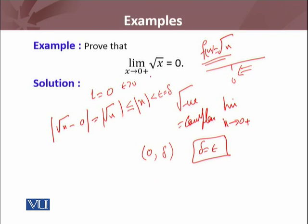For every ε, we are able to find a δ such that for x in this interval — where 0 < x < δ = ε — the condition holds. In fact, taking δ = ε works for this particular example. So we have formally proved that this right-sided limit of the function √x, whenever x approaches 0 from the right side, exists and is equal to 0.